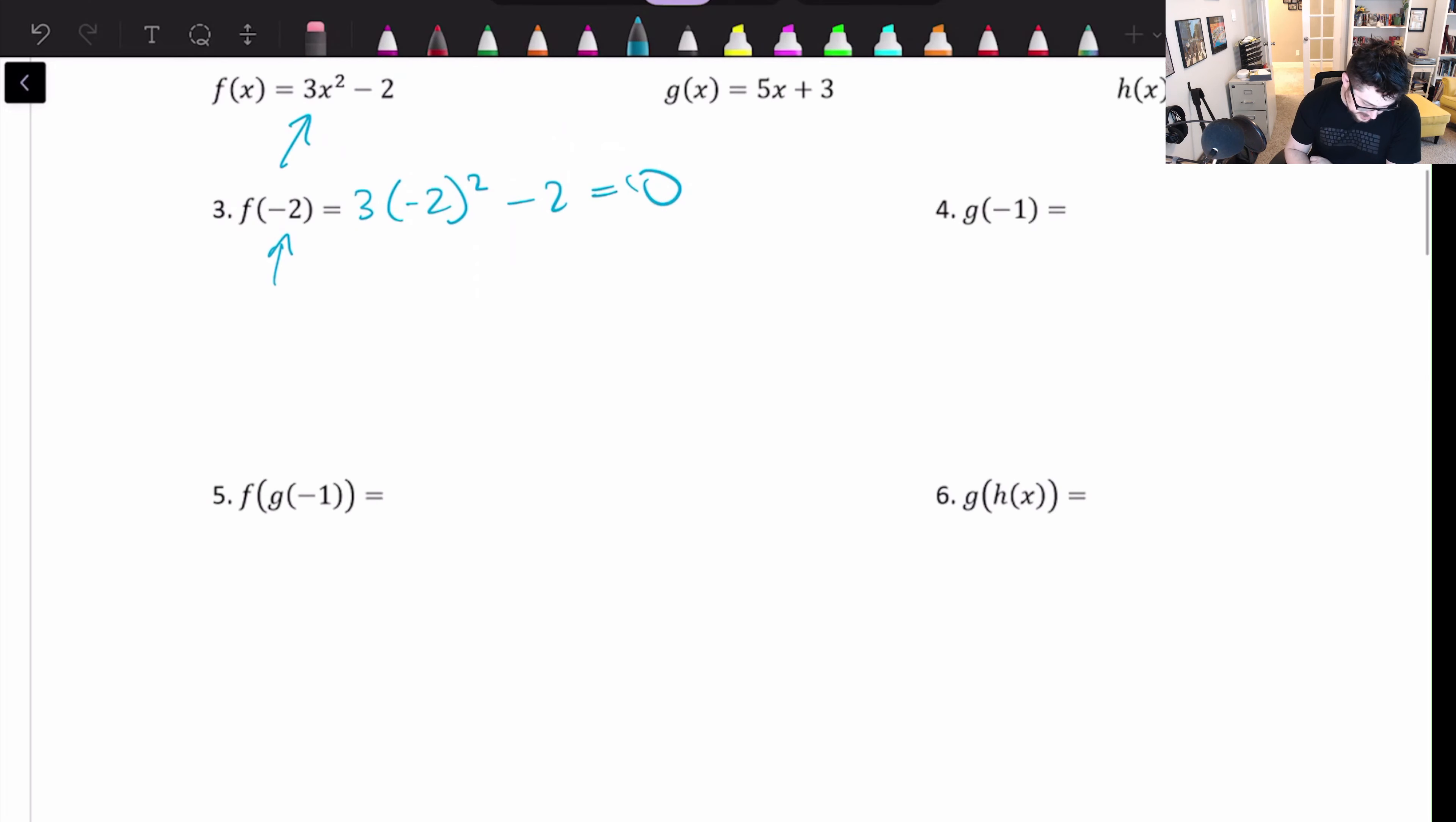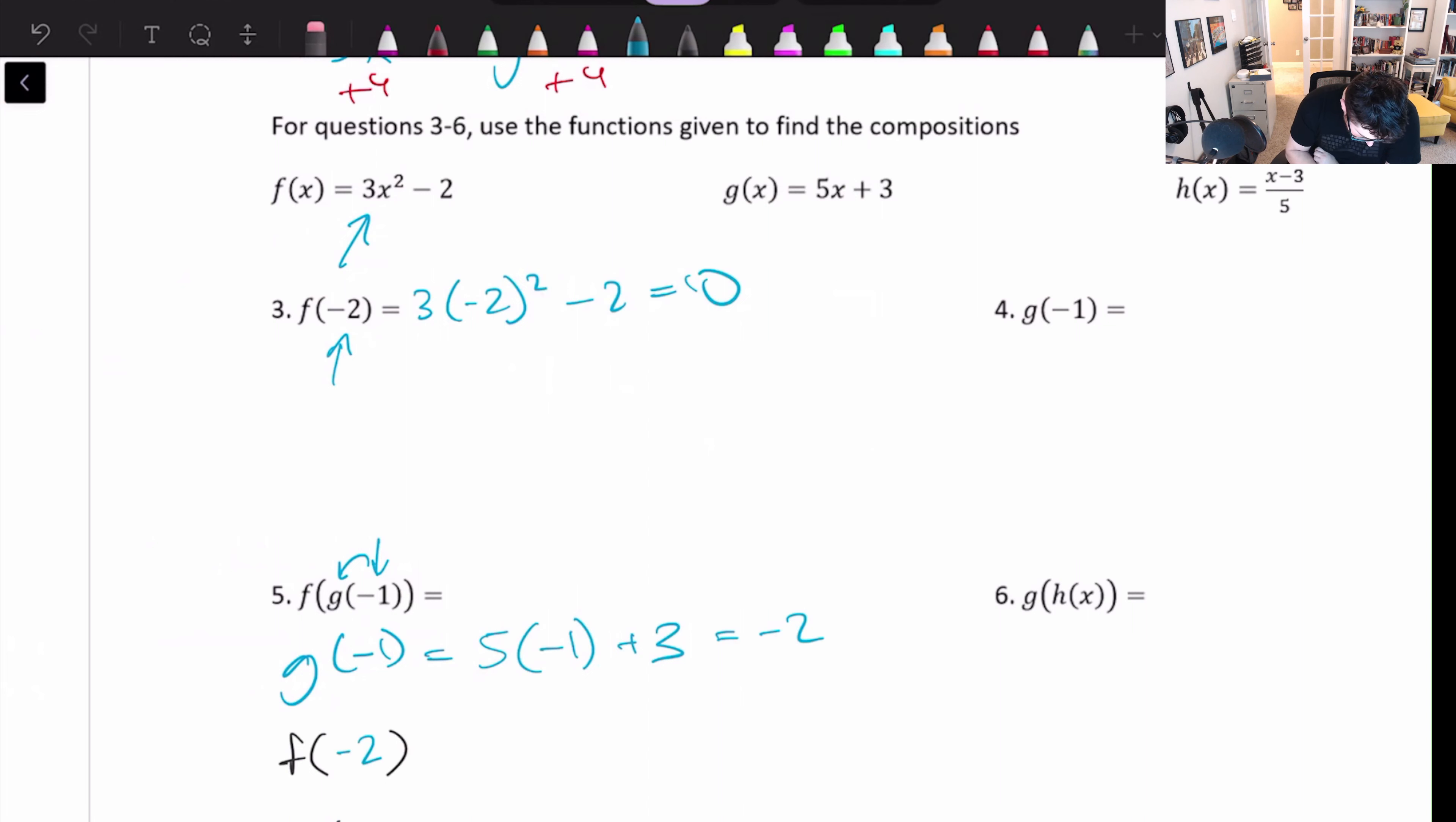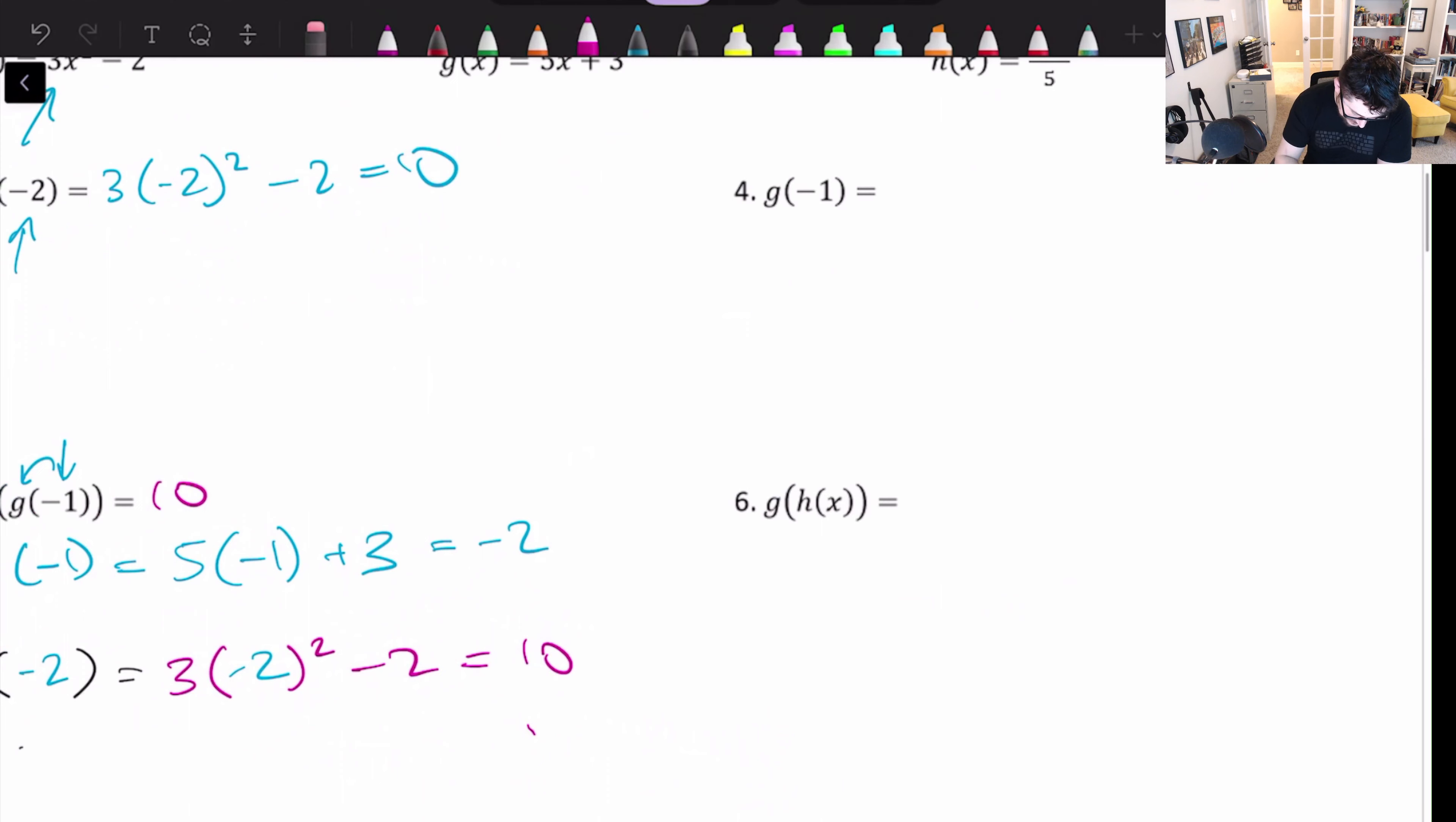So with 5, what you would do is you would take the negative 1 here, and we're plugging it into g first. So g of negative 1 is 5 times negative 1 plus 3. Plugging that into our calculator, we give you negative 2. So in other words, what we really have is we have f of negative 2. And so what we can do is we can then take that and plug that into our f function, our f function being 3x squared minus 2. But we're just going to plug in negative 2 for x. Plugging that into our calculator, let's see, 3 times negative 2. Wait, this is the exact same thing that we got before. Regardless, it's going to give us 10. So our final answer is 10.